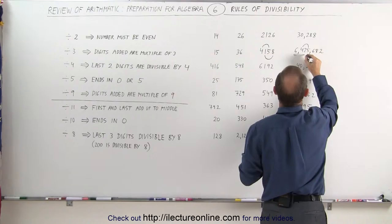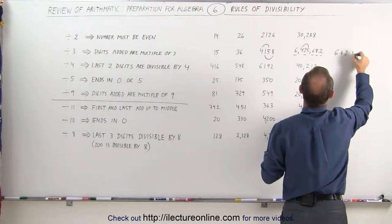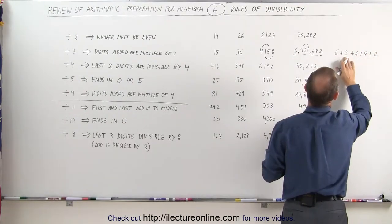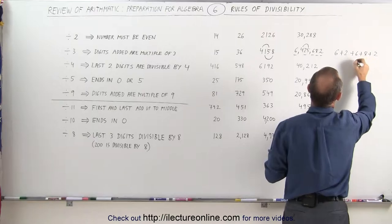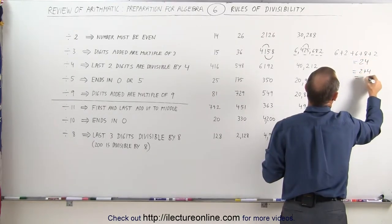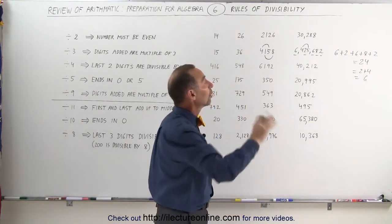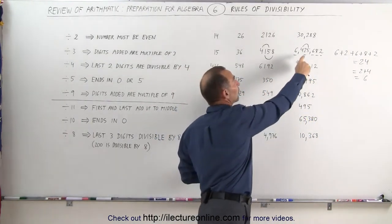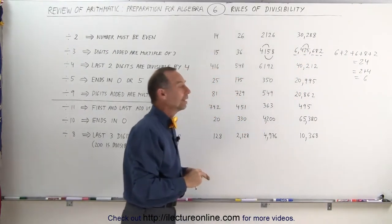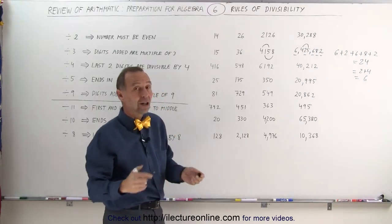Now we still need to add the other digits together, so I'm going to add 6 plus 2 plus 6 plus 8 plus 2. That's 8, then 14, then 22, then 24. Now I add 2 plus 4, that gives me 6. Since 6 is divisible by 3, the whole number is divisible by 3. I don't have to worry about the 4 and the 5 because together they add up to 9, which is divisible by 3. That's how we can quickly tell if a number can be divided by 3, no matter how large it is.